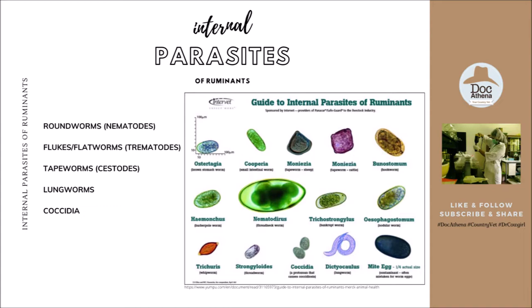Of course, it depends on the microscope you're using, but for an ordinary light microscope you might see what I showed you a while ago. There are some characteristics of certain eggs that will tell us what type of egg it is and from which parasite it came from. We will be discussing roundworms or nematodes, flukes or flatworms also called trematodes, tapeworms also called cestodes, and also lungworms and coccidia.